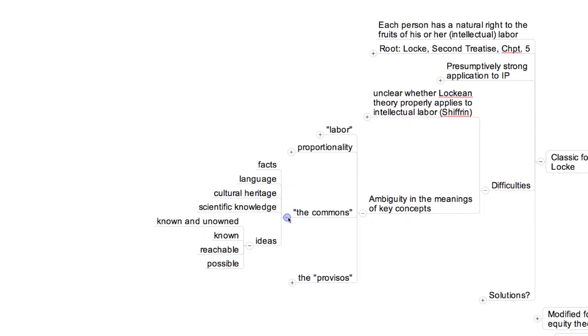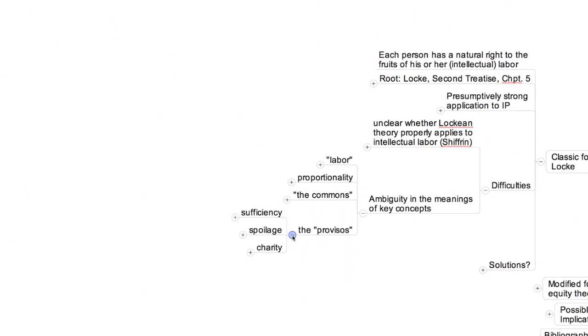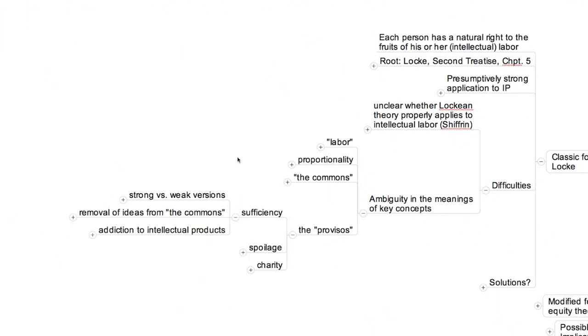Last but not least, the application of the provisos, the famous three Lockean provisos, to copyright law is tricky. The problem arises from the ambiguity of the provisos themselves. For example, should the sufficiency proviso be construed to prevent the acquisition of property rights when the result would be to leave unowned raw materials insufficient amount for others to appropriate? Or rather, should it be construed more broadly to prevent the acquisition of property rights only when the overall welfare of other people is impaired?